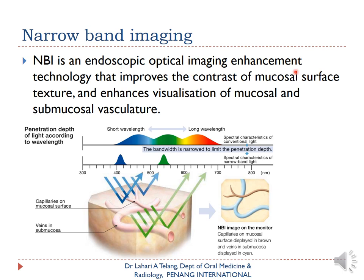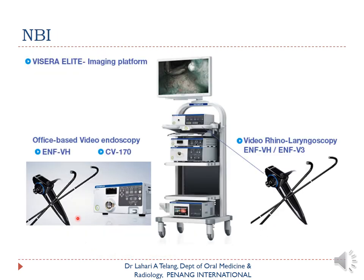Narrowband imaging is an endoscopic optical imaging enhancement technology that improves contrast of mucosal surface texture and enhances visualization of mucosal and submucosal vasculature. It is based on the wavelength of light penetrating and reflecting from the lesion, and is used especially in ENT settings to examine the larynx, pharynx, and areas difficult to examine clinically.